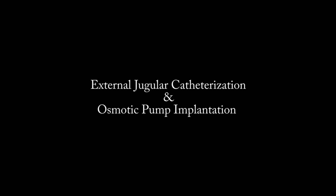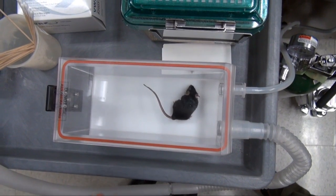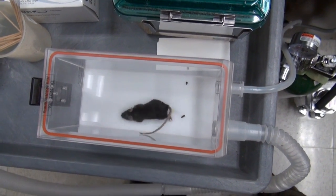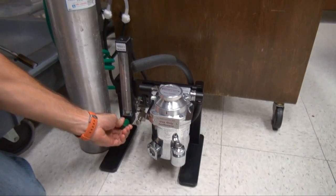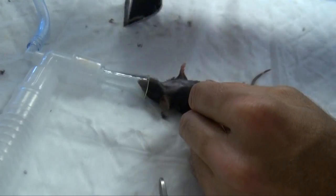Anesthetize animal in a sealed chamber with 3% isoflurane and oxygen for 3 minutes. Once adequately anesthetized, move animal to the workbench where continuous volatile anesthetic, 1.5% isoflurane and oxygen, will be administered by nose cone.